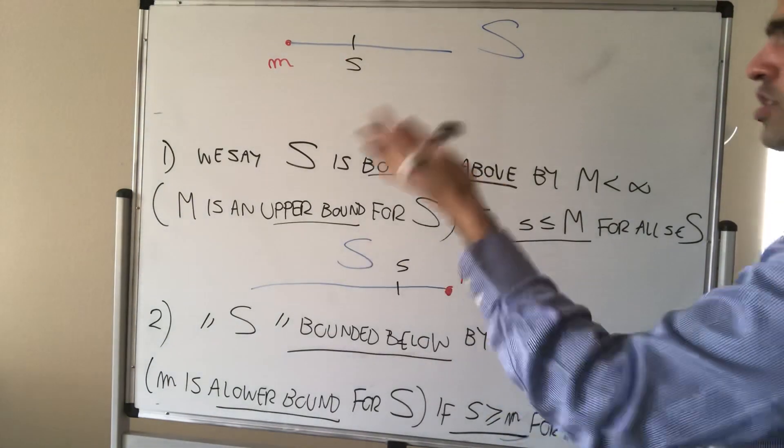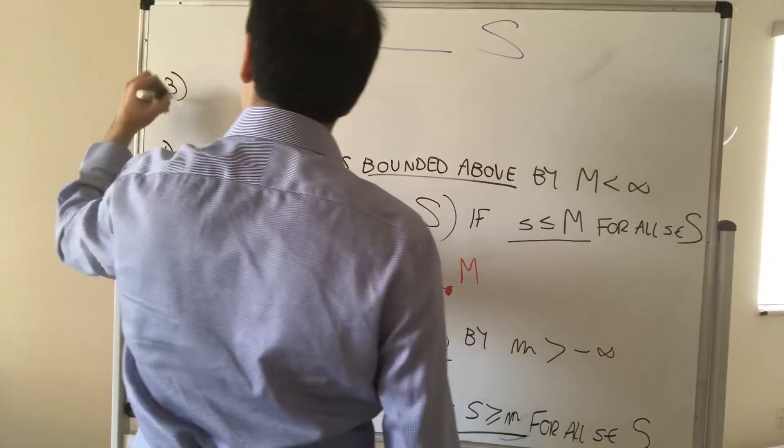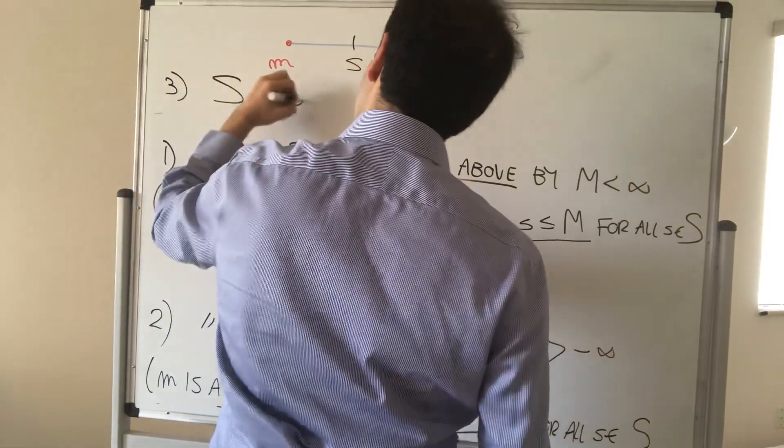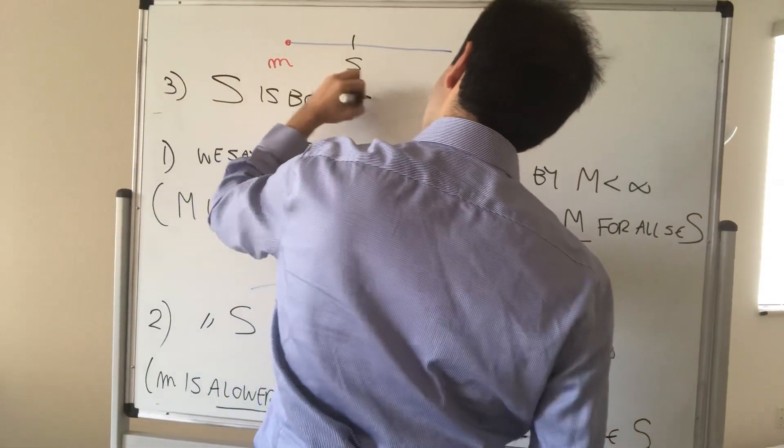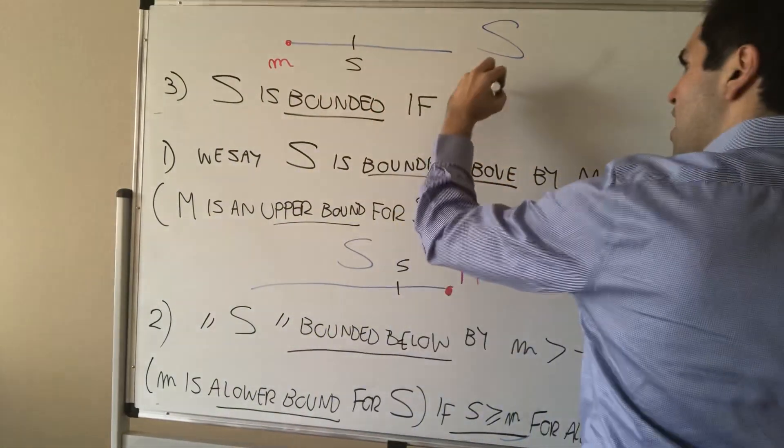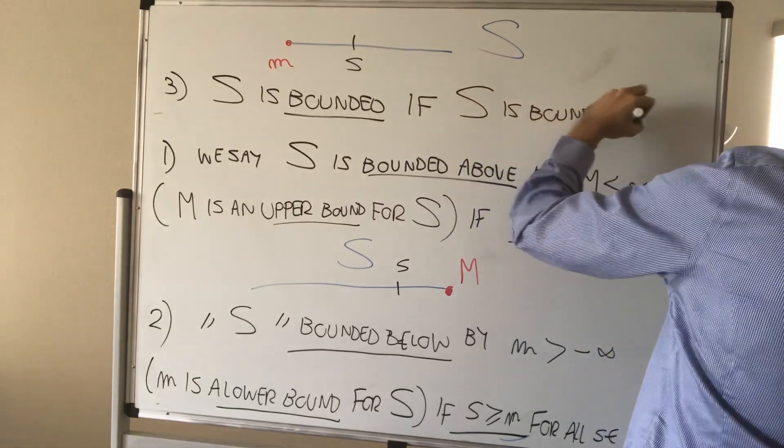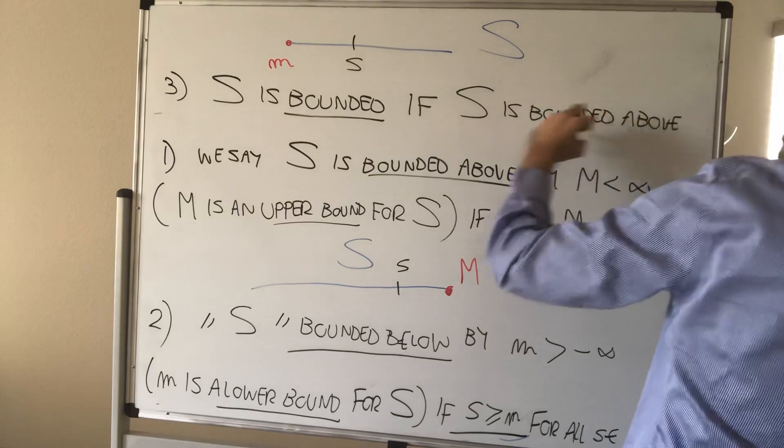And lastly, we just say S is bounded if both things are true. If S is bounded above and below.